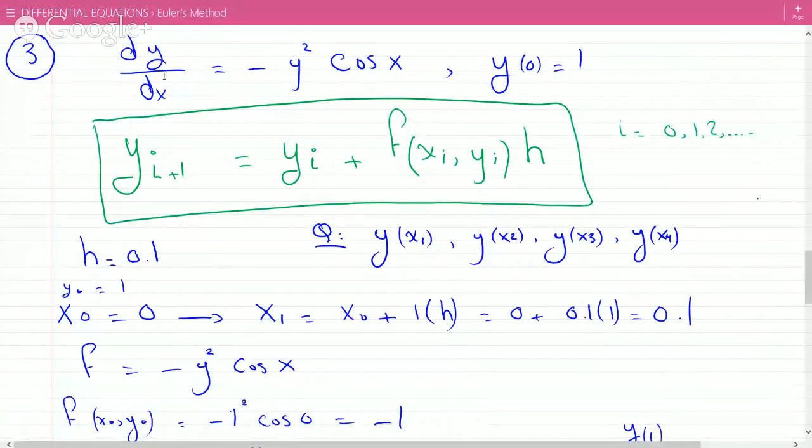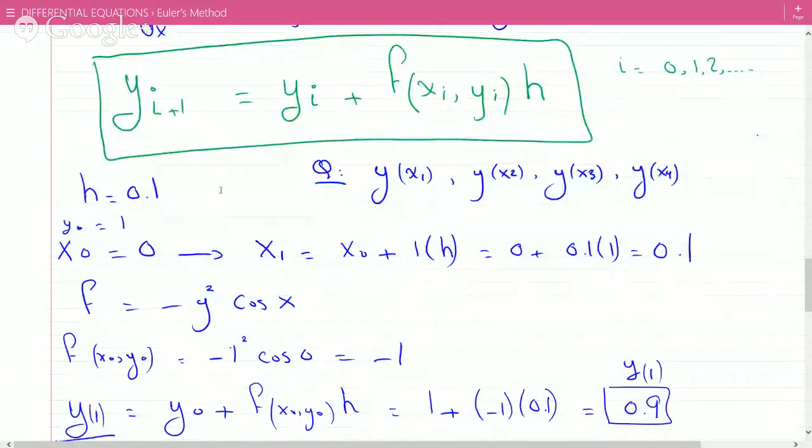So this is Euler's method, with a step size of 0.1, and you're trying to figure out x1, x2, x3, and x4.